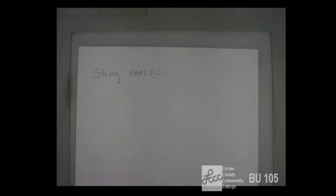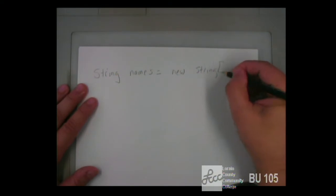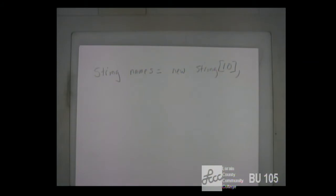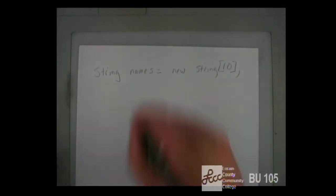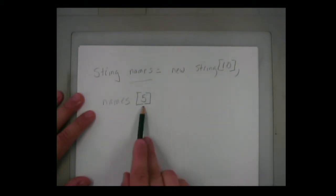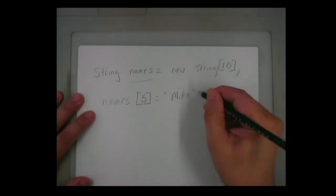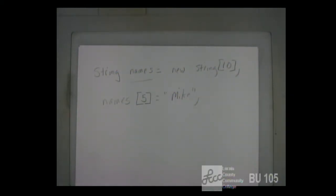We can declare an array two different ways. One way is to say: String[] names = new String[10]. That will create an array that will have 10 elements in it, and each element has to be a String. I can then refer to individual items by saying the name of the array — names — followed by a subscript. So names[5] is the string in position five. Array elements start with zero, so the first element is names[0], names[1], names[2] ... through names[9].